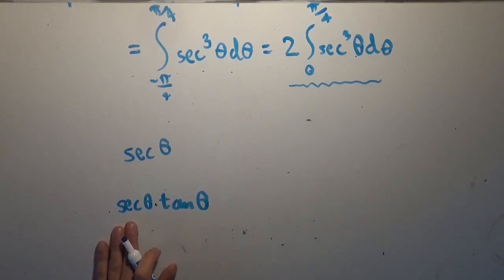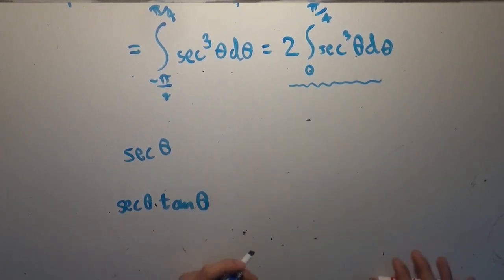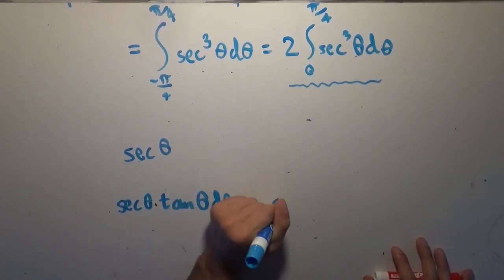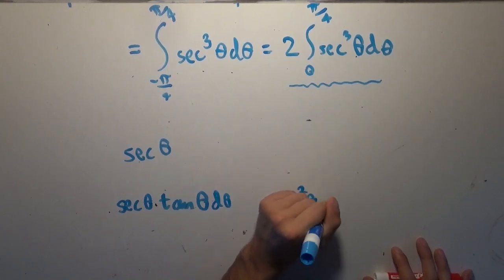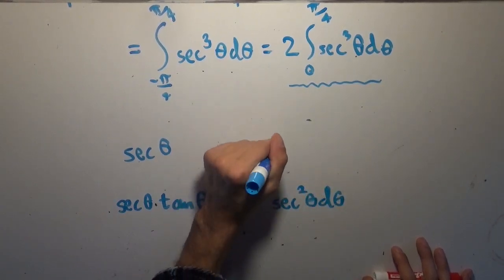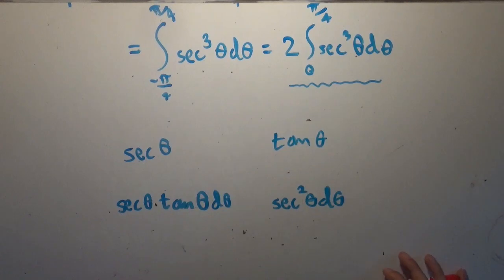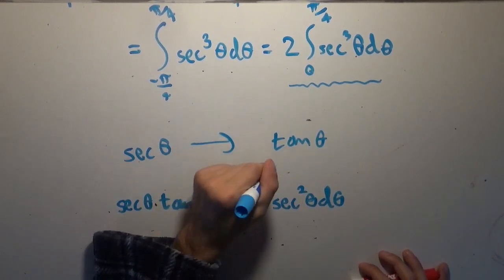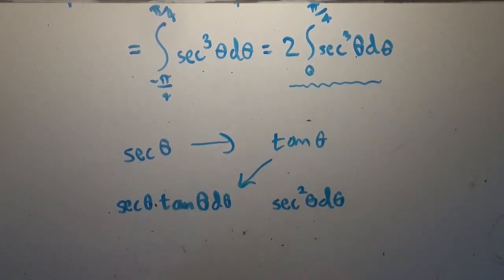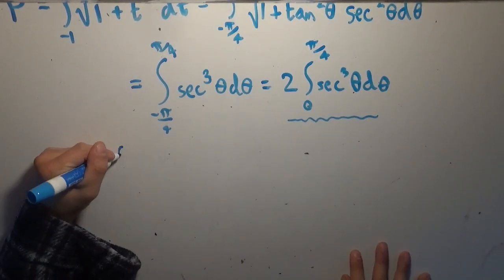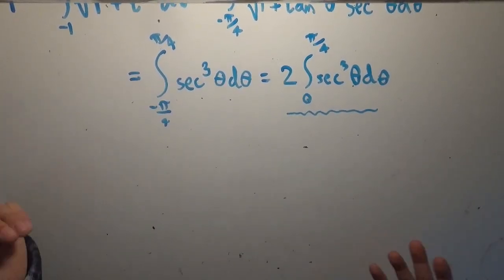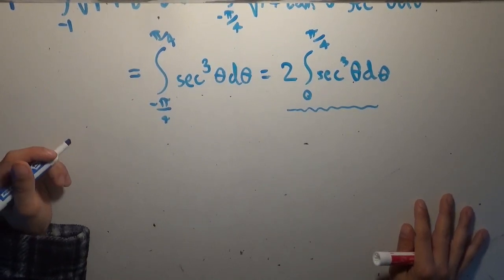You may as well just try deriving that on your own. We're going to integrate secant squared theta d theta to end up at tangent theta. Now we're going to do integration by parts: multiply these two things together and subtract the integral of the product of those two things. We're going to find the anti-derivative of secant cubed, and then plug it in because it's interesting.